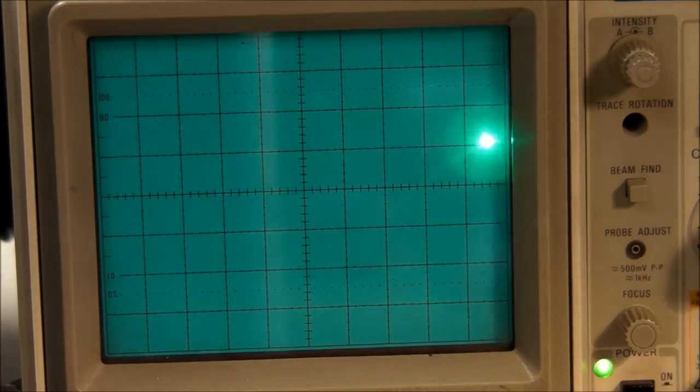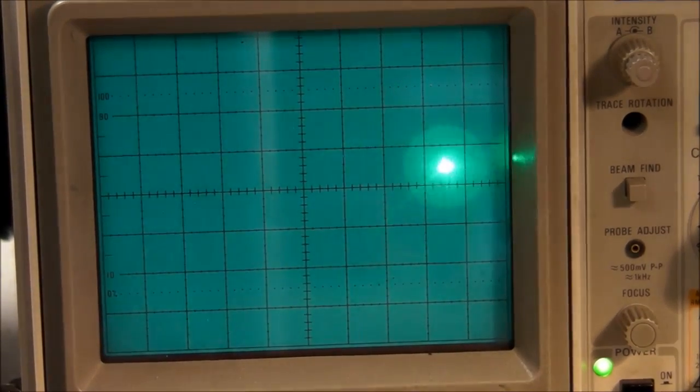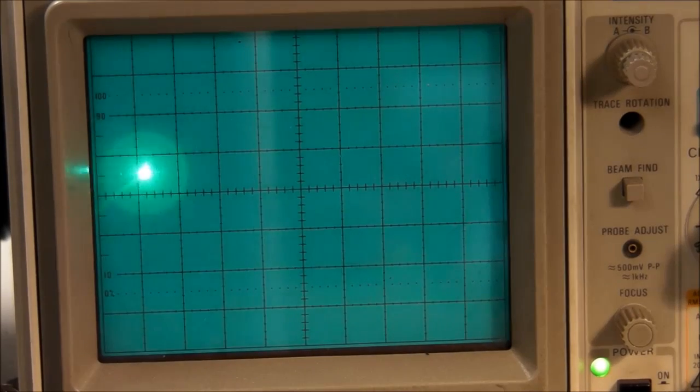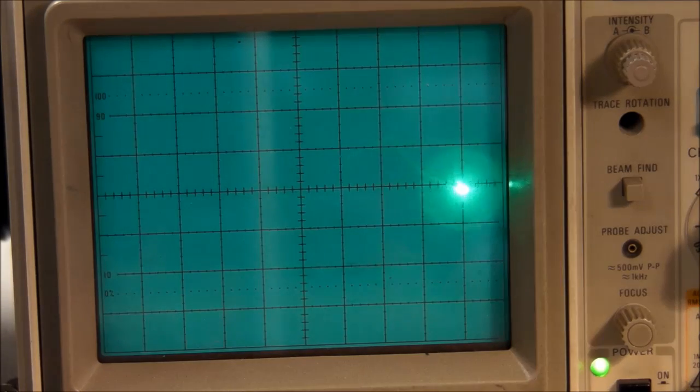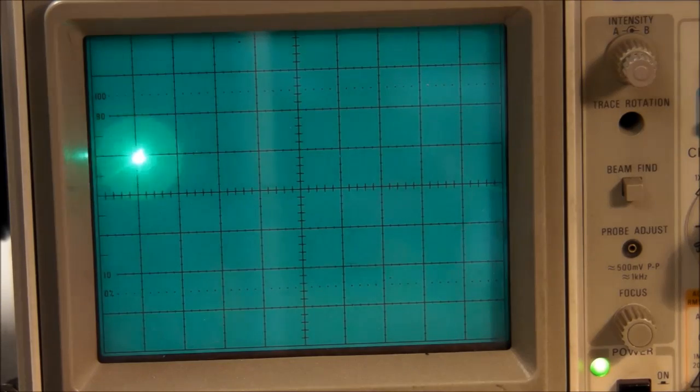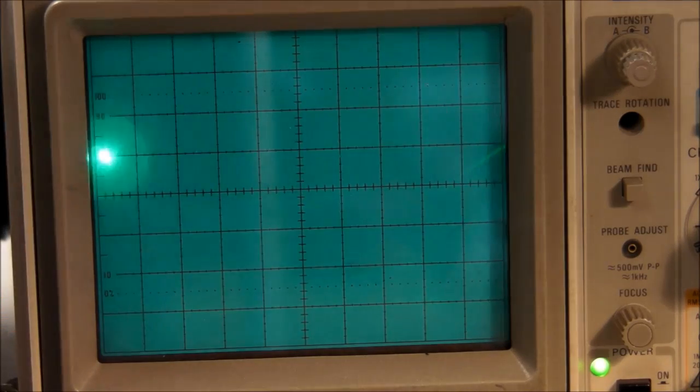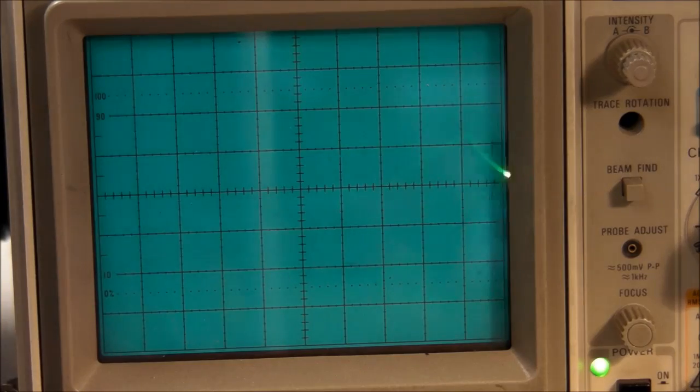All right. So there you can see the slow exponential rise and then very rapid drop of the capacitor voltage. Now let me take out that one ohm resistor. And now it's a nice exponential rise and also slow exponential fall.